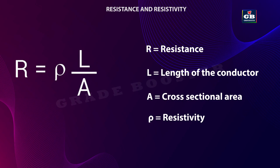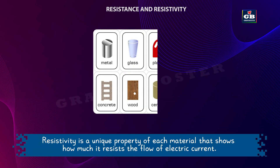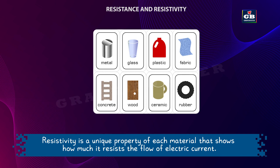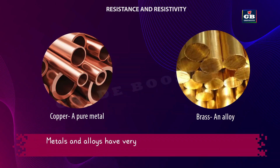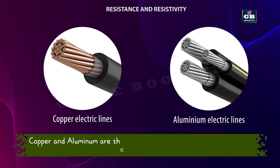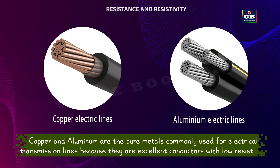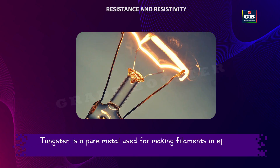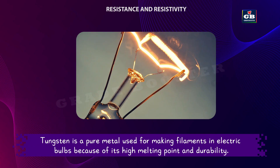The SI unit of resistivity is ohm meter. Resistivity is a unique property of each material that shows how much it resists the flow of electric current. Metals and alloys have very low resistivity, usually between 10 to the power of minus 8 ohm meter to 10 to the power of minus 6 ohm meter, making them good conductors of electricity. Copper and aluminum are the pure metals commonly used for electrical transmission lines because they are excellent conductors with low resistivity. Tungsten is a pure metal used for making filaments in electric bulbs because of its high melting point and durability.